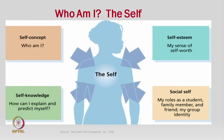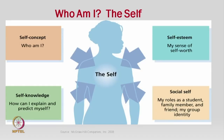The self has various aspects: self-concept (who am I?), self-knowledge (how can I explain and predict myself?), self-esteem (my sense of self-worth), and social self (my role as a student, family member, friend, and my group identity). All these are perceived roles — what kind of student you are, what kind of family member you are, your group identity. Self means it has various dimensions — self-concept, self-knowledge, self-esteem, social self, etc. — and this totality is your self.